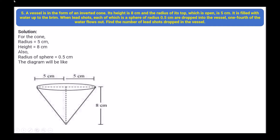Next: a vessel is in the form of an inverted cone. Its height is 8 centimeter and the radius of its top, which is open, is 5 centimeter. It is filled with water up to the brim. Lead shots, each a sphere of radius 0.5 centimeter, are dropped into the vessel and one-fourth of the water flows out. Find the number of lead shots dropped. Radius = 5, height = 8, radius of sphere = 0.5 cm.